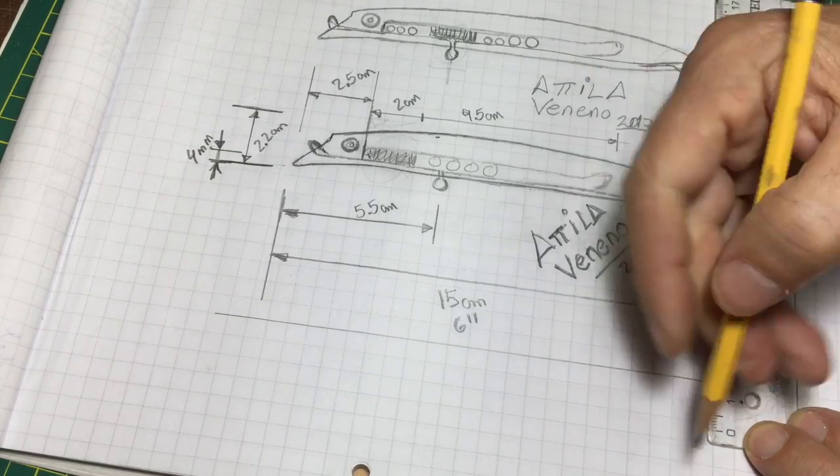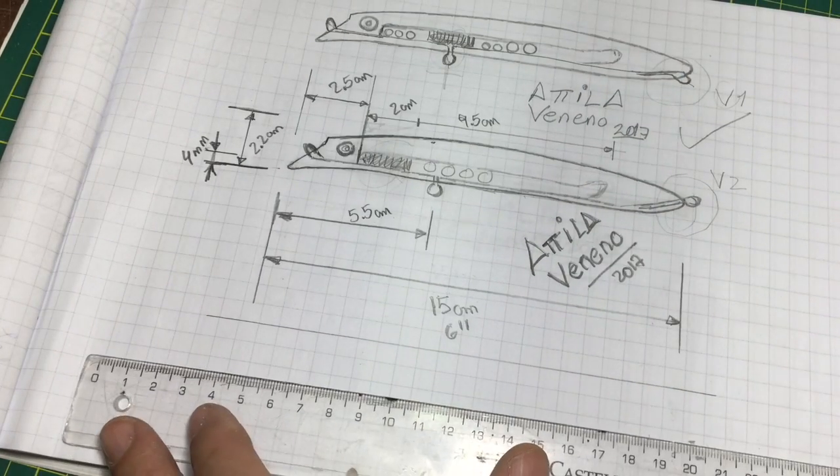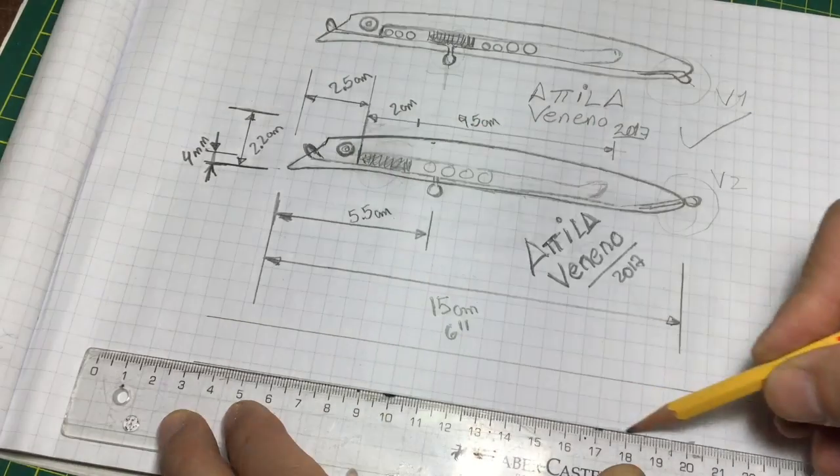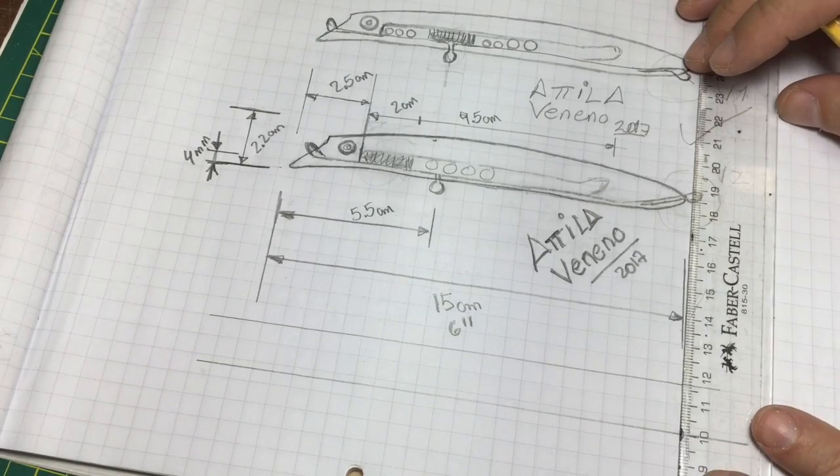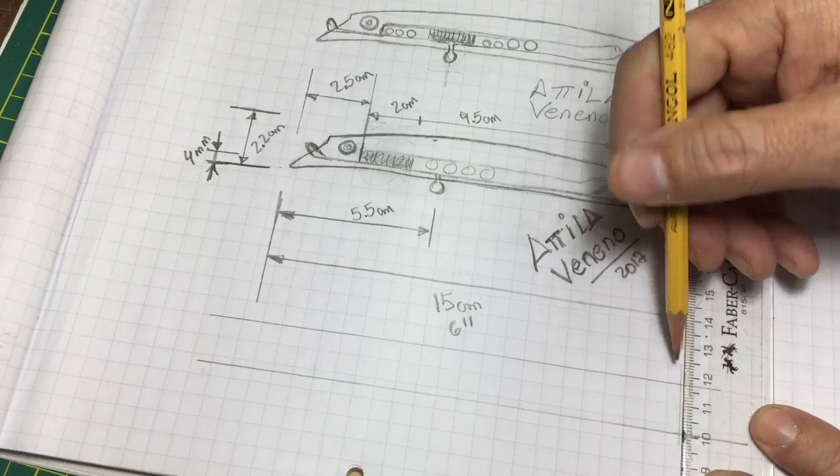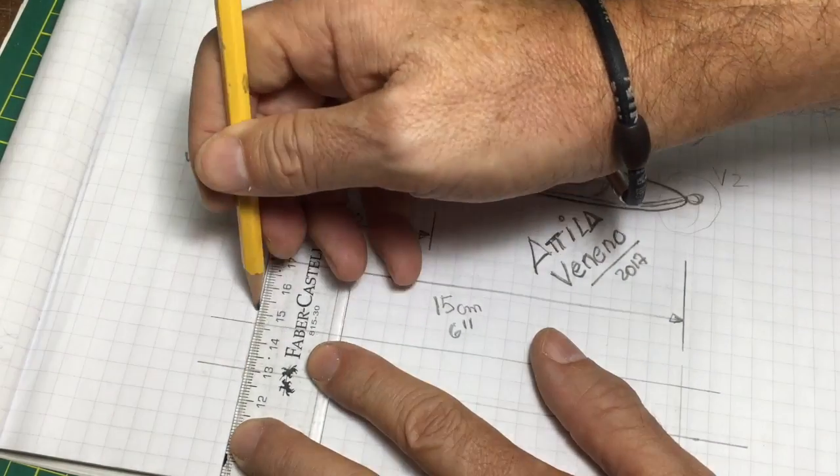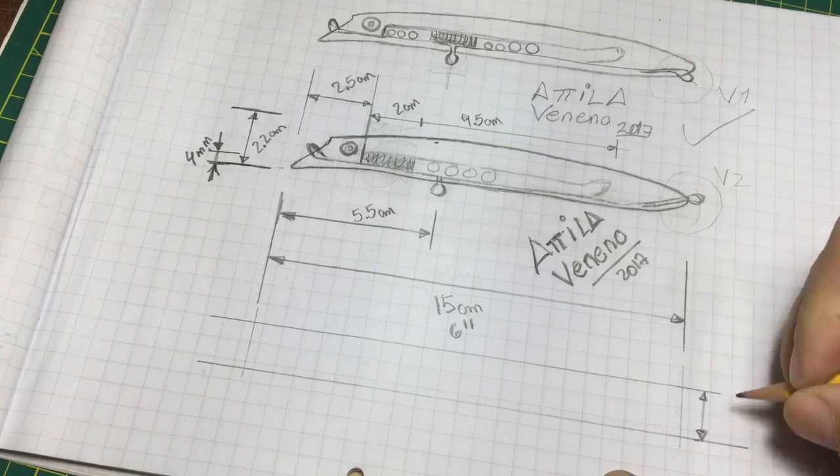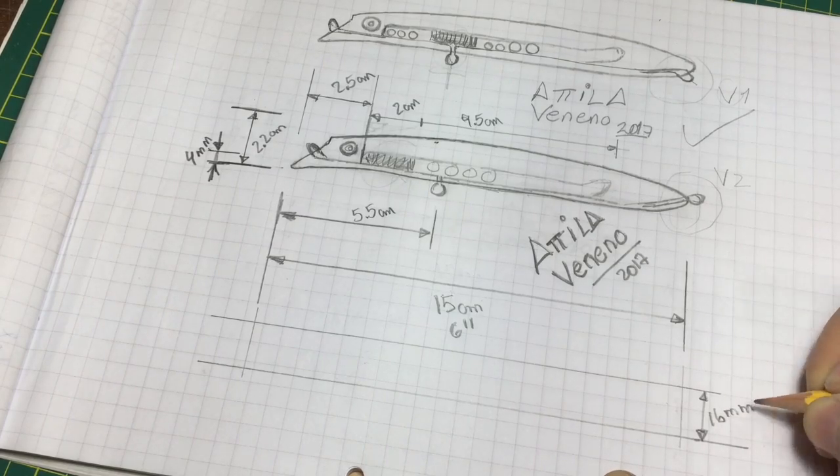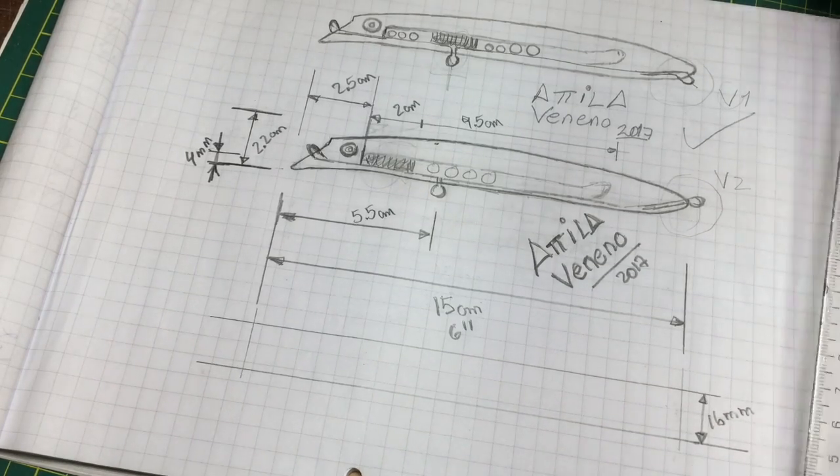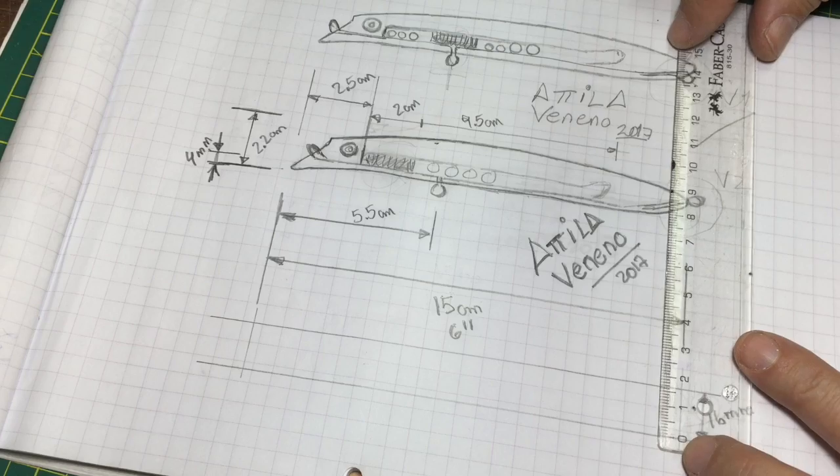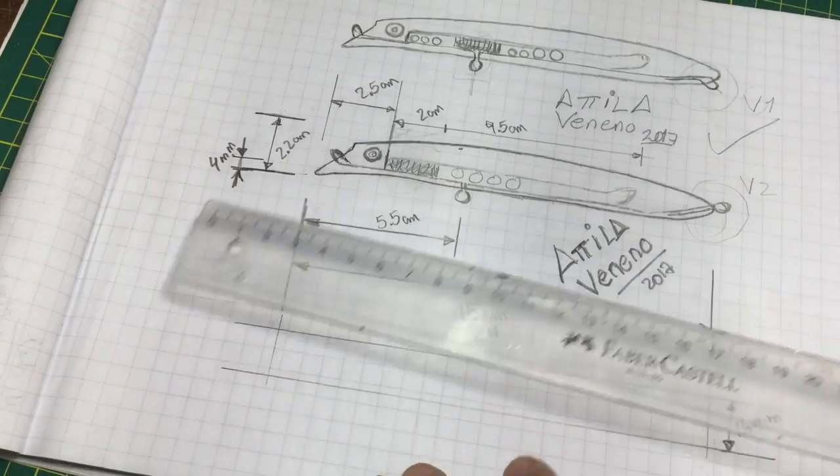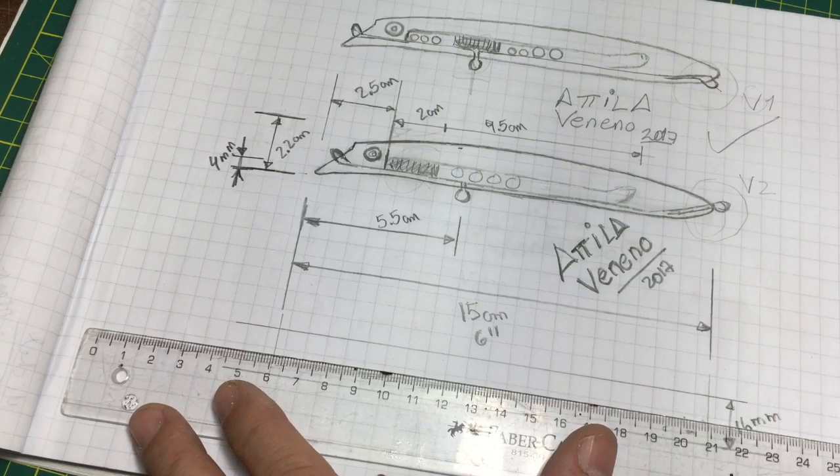To complete the design, now I have to draw the top view. Let's see how I did. As you see, I begin drawing some reference lines. And now, the measure of the width of the lure, which is 16 mm.